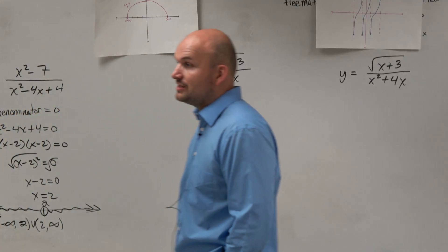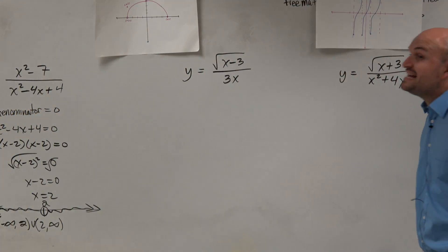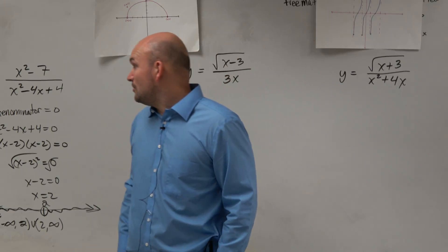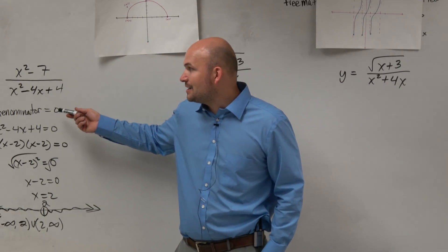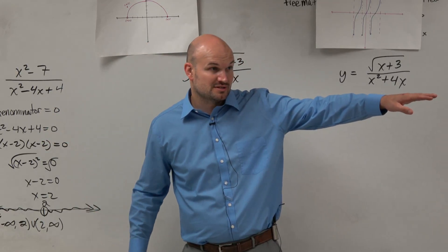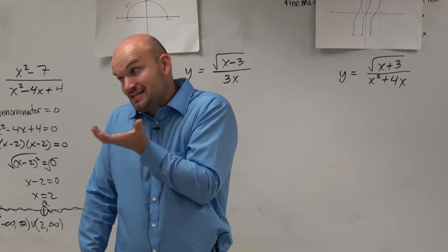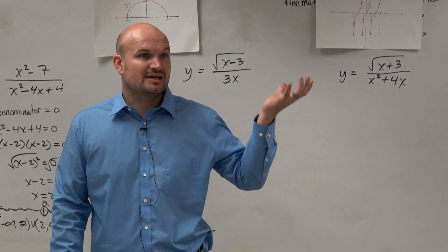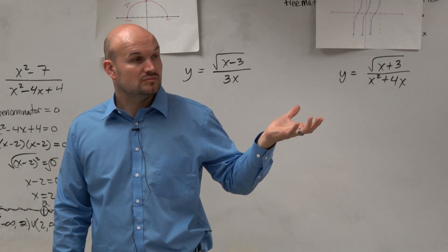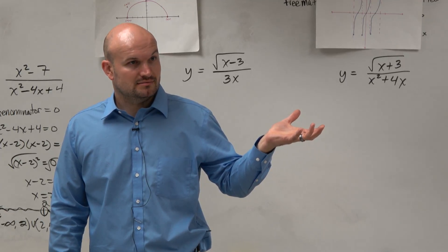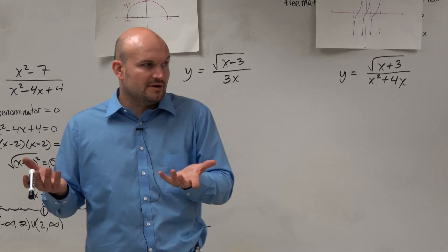Now we have a radical in the numerator, and we have a fraction. So now we're going to have to apply both of our notes. Our radicand has to be greater than or equal to 0, and our denominator cannot equal 0. You guys get that? So all we're doing is combining them together now.